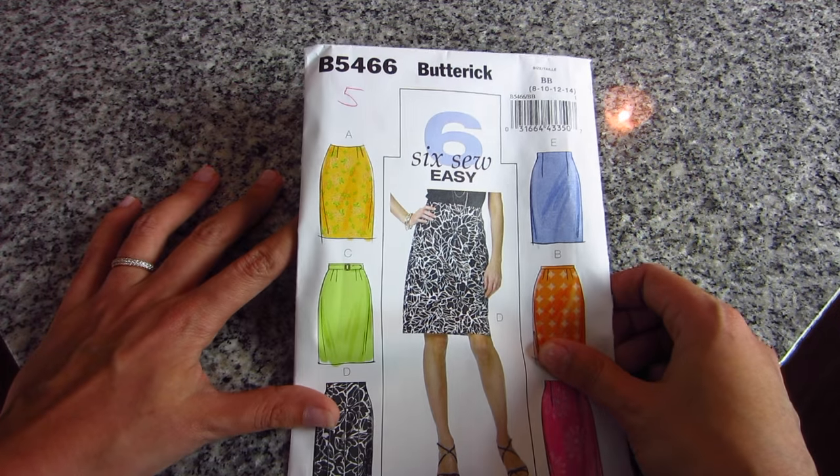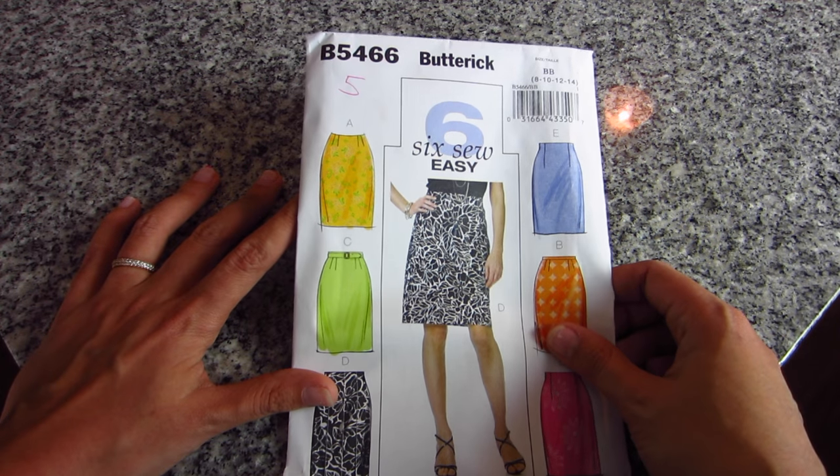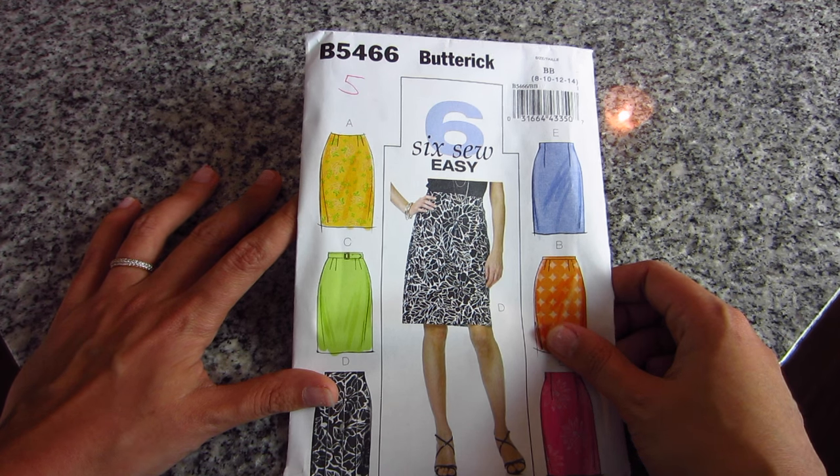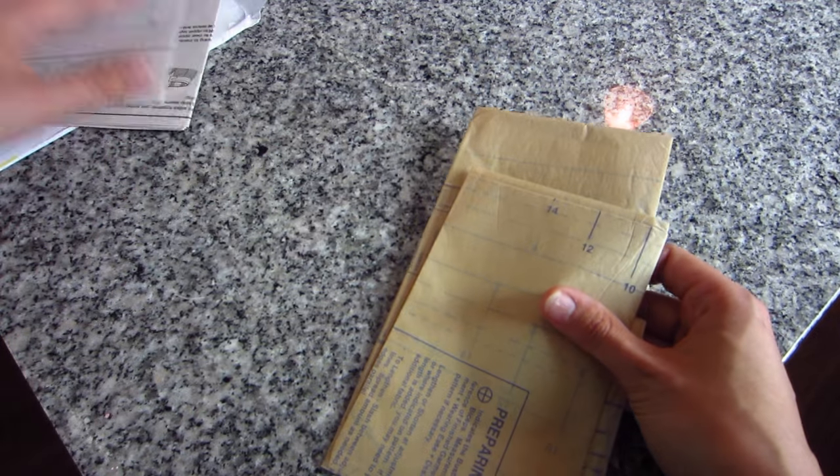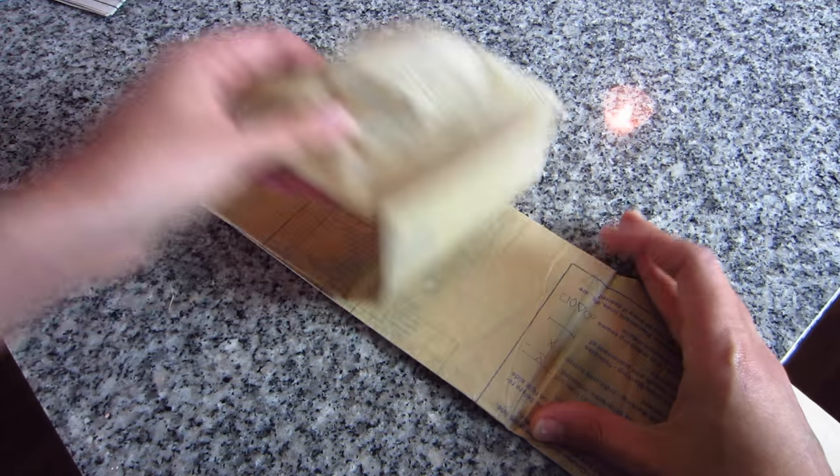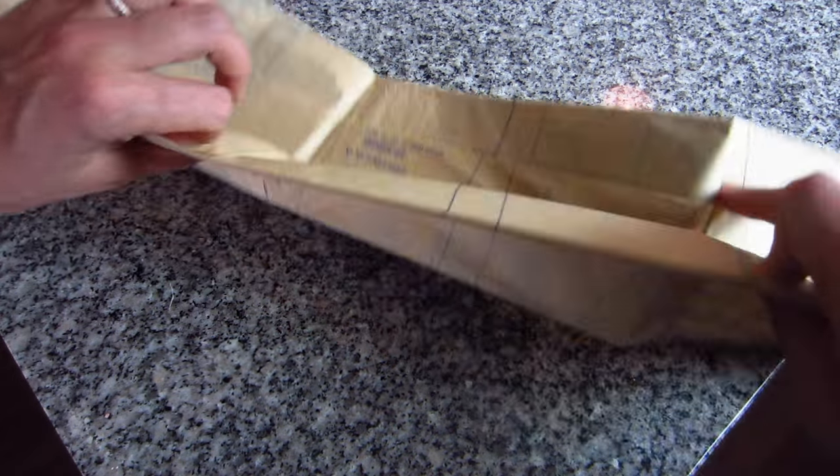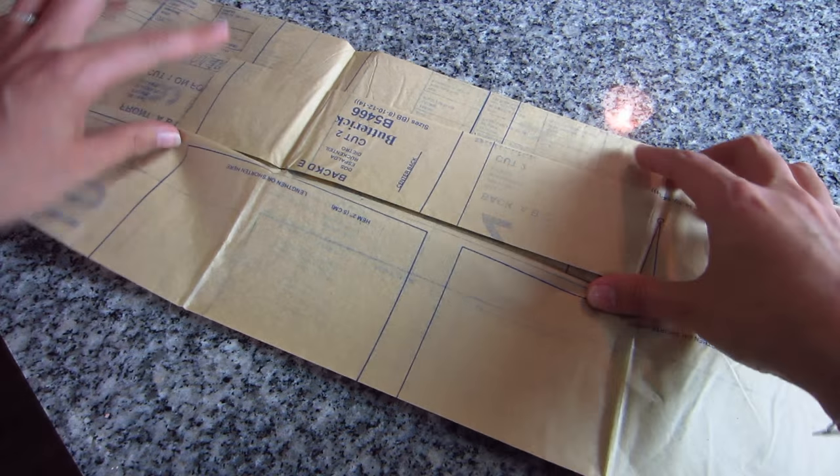So here's our trusty Butterick 5466, the pattern that we are sewing with for this entire series. When you open up the pattern envelope itself, you're going to find the instruction booklet and then you're going to find a bunch of pieces of tissue paper all folded up like this, and you are going to open it up, obviously.